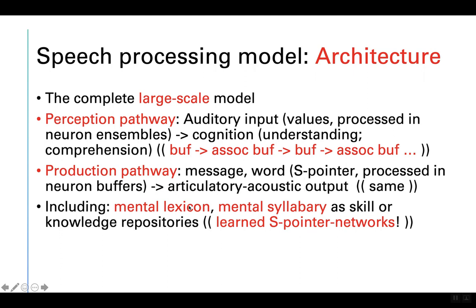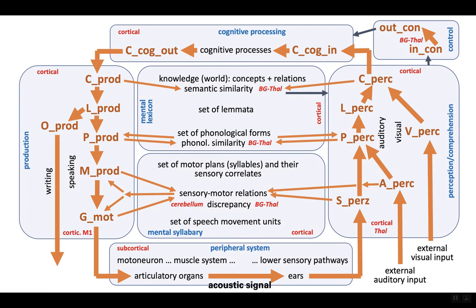Between the perception and production pathways, we have two knowledge repositories: the mental lexicon and the mental syllabary, comprising the knowledge of S-pointer networks. The production pathway going through the periphery to the perception side, through cognitive processing and back to production, forms a big loop. This loop appears to have some shortcuts — control mechanisms on the semantic level, the phonological level, and for articulation — called internal feedback loops.